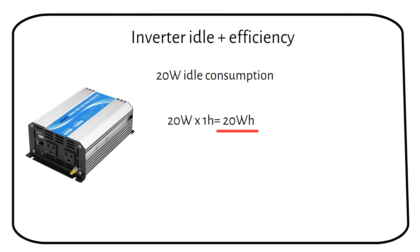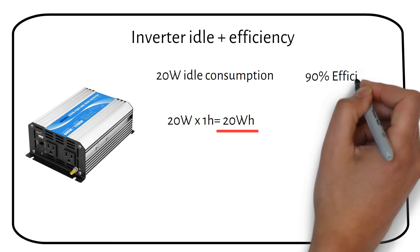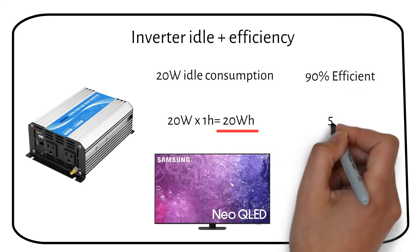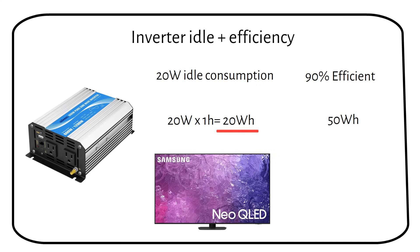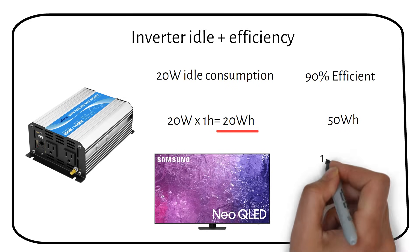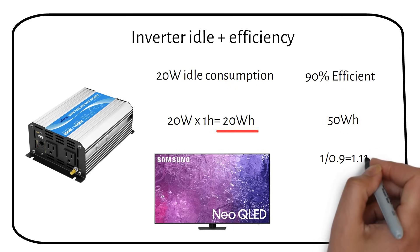The inverter converts DC power to AC power. But this is not 100% efficient. Most inverters have an efficiency of 90%. Remember the TV uses 50 watt hours? We have to multiply it by the efficiency of the inverter. 90% becomes a factor of 1.11.